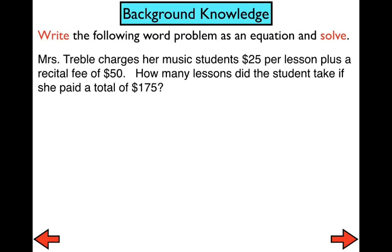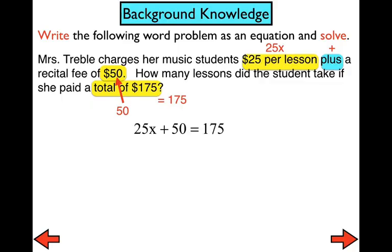We also have to remember how to set up a two-step equation because these word problems are very similar. There's only a couple of words that are slightly different. We were looking for terms that included the word 'per,' 'an hour,' 'each lesson,' or something like that — that usually told us where the x would go. So the $25 per lesson represents 25x, she already had $50, so that is represented with plus 50, and the total is usually on the right-hand side of our equation, or in this case, the inequality.